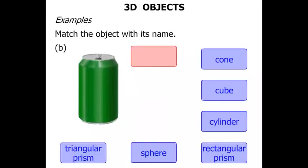The next one, this green soft drink container. It's got a round top. What do you think? This is a cylinder.